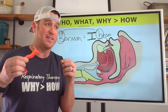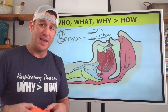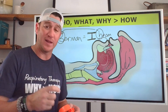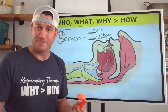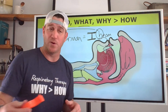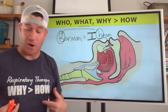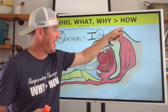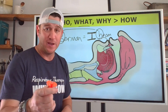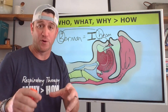Anytime you're aiding bag valve mask ventilation, a patent airway is key — if you don't have a patent airway, you can't get air to the lungs, and that's what we need. The why is always greater than the how, but you still have to know how to insert these devices.